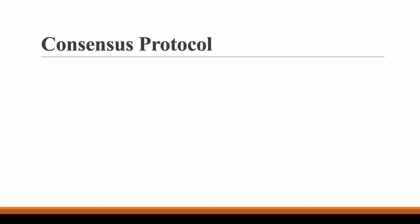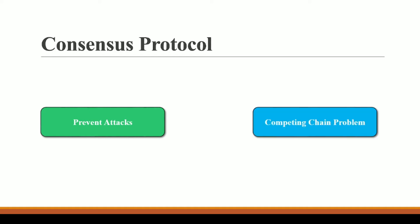Consensus protocol helps us in two ways. First, in order to prevent attacks — if some hacker is trying to attack our blockchain, it helps us defend against that. Second, it helps with the competing chain problem, which we will see in the next video. In this video we are going to talk about how it prevents attacks.